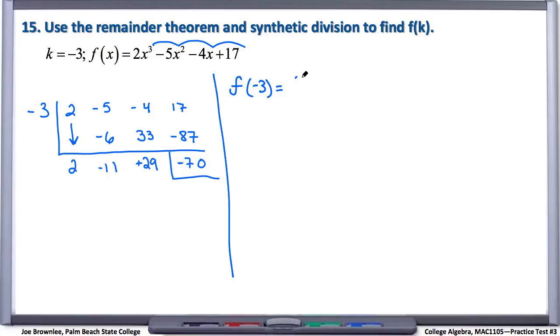So we're gonna say 2 times negative 3 cubed minus 5 times negative 3 squared minus 4 times negative 3 plus 17. Alright.